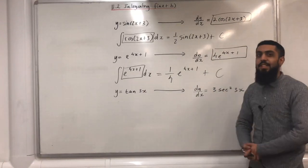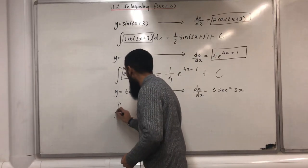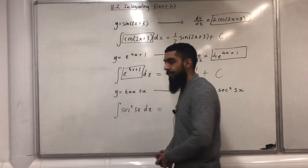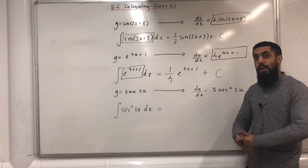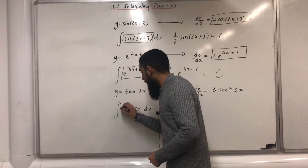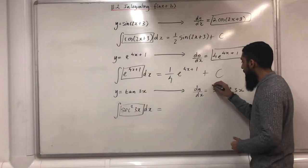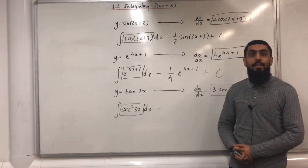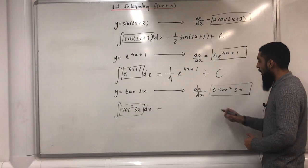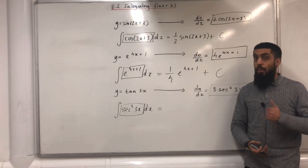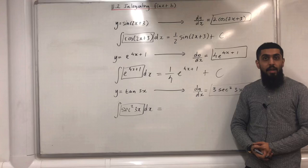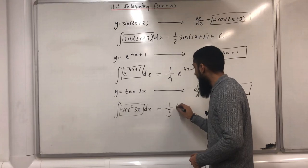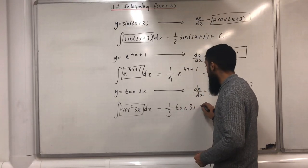My next integral that I want to find is the integral of sec²(3x) dx. Now I put a rectangle around sec²(3x) and a rectangle around 3sec²(3x). Over here the coefficient of sec²(3x) is 1, and over here the coefficient of sec²(3x) is 3. How do I go from 1 to 3? I can divide by 3. Therefore this particular integral will just be a third tan(3x) + c.